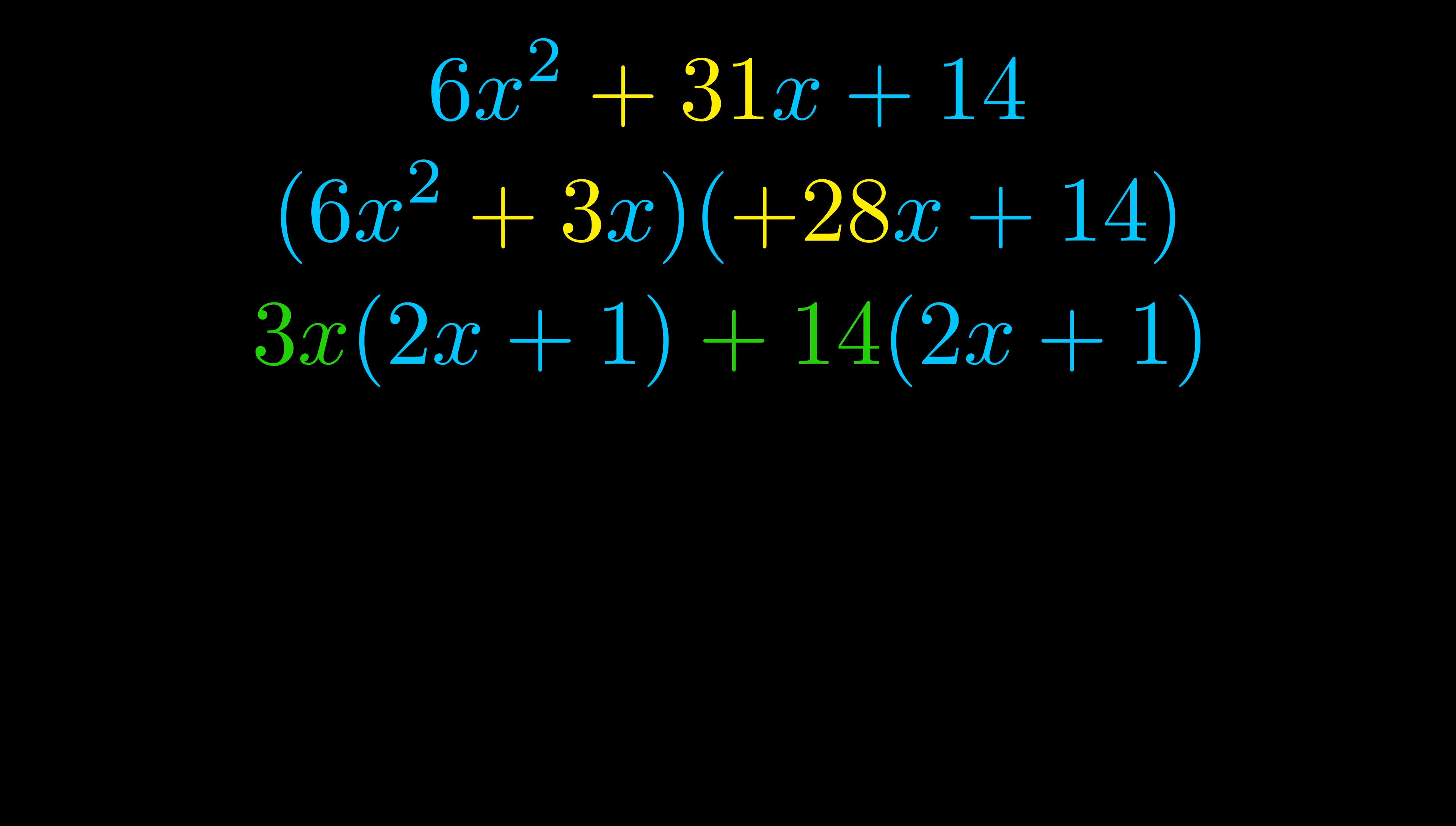Notice also how what remains inside of the parentheses is the same in both cases. The blue values are the same. Those blue values will become one of our factors and we will combine the two green values, the GCFs that we pulled out, to get the other one.